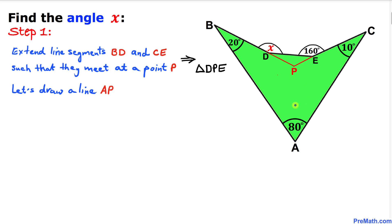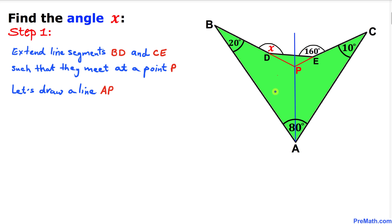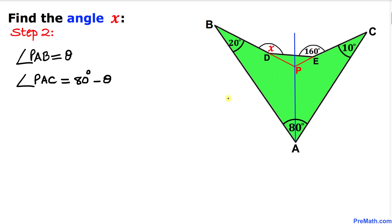Now we are going to connect point A and point P. Let's connect these two points and keep extending it. As you can see, the line AP has divided angle A into two parts. I'm going to call this part angle theta, so this side is theta, and since the total angle is 80 degrees, the other side angle is going to be 80 degrees minus theta.